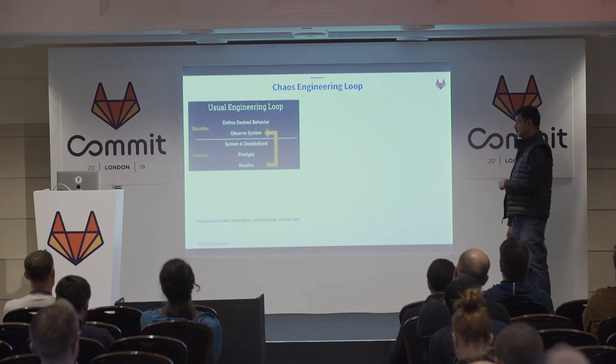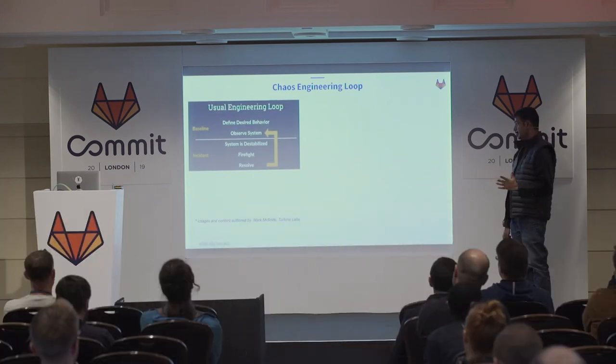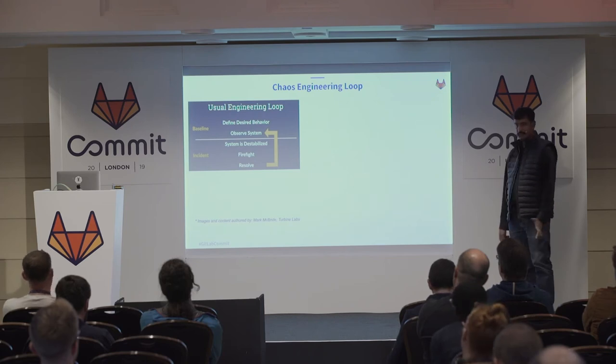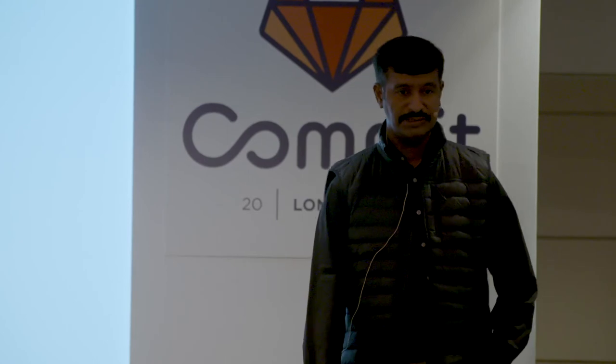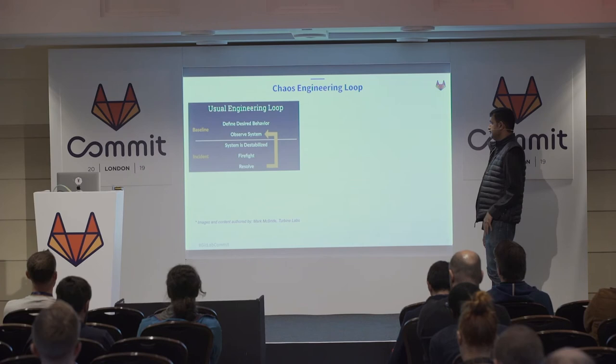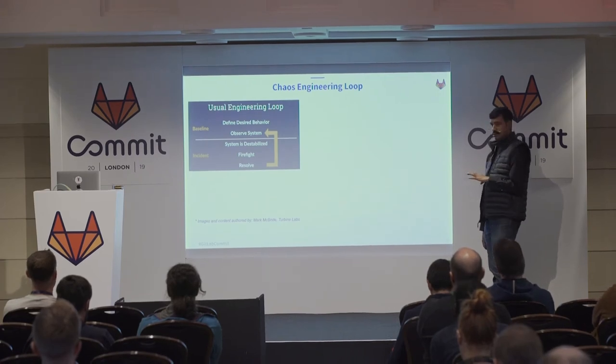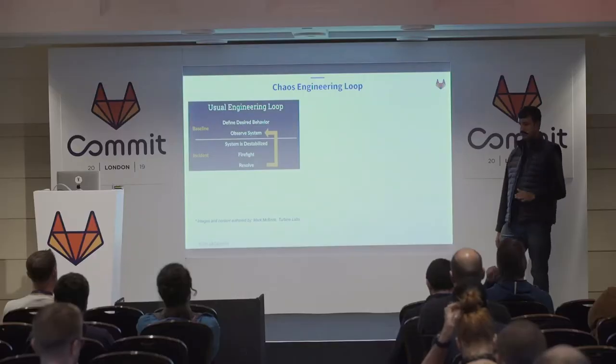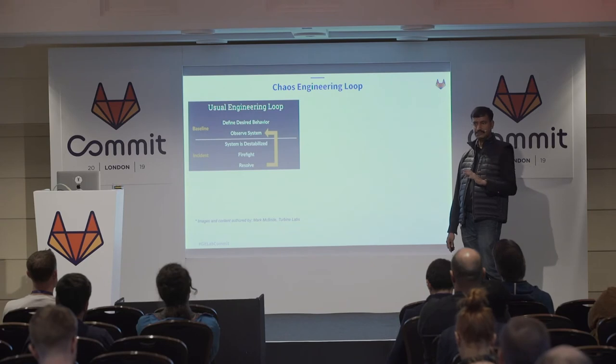There is something called the chaos engineering loop. These images are taken from slides presented by Mark McBride, a known authority on chaos engineering and CEO of Turbine Labs. The way he explains it is really nice. In the usual engineering loop, you've got a good stable system, things are running fine, and then something happens — an incident. Your entire incident management kicks in and you start firefighting. From the SRE to the developers to your CEO, everybody is on the call. Then you resolve it and start observing again.